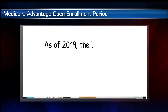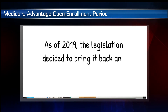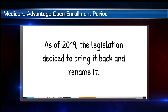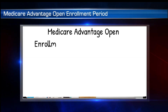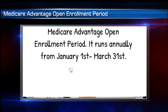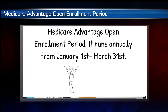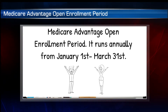As of 2019, the legislation decided to bring it back and rename it. It is now called the Medicare Advantage Open Enrollment Period, and it runs annually between January 1st and March 31st.